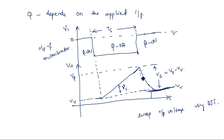Again at T equals Ts, we will have the maximum amplitude, which is the peak amplitude Vp. This is the way to design a bipolar junction transistor sweep generating circuit.